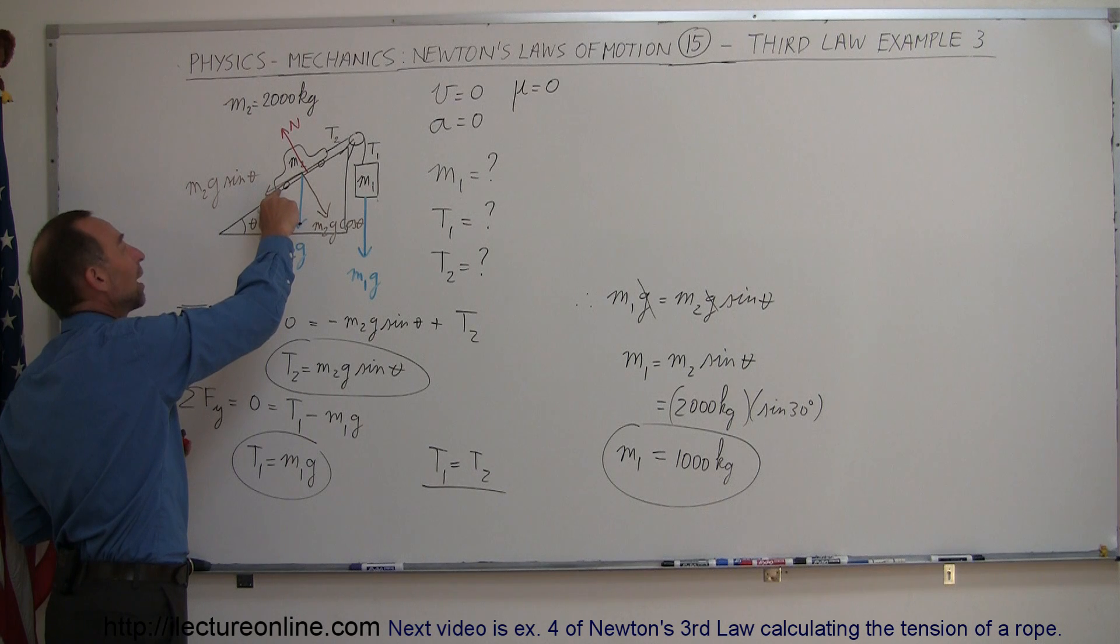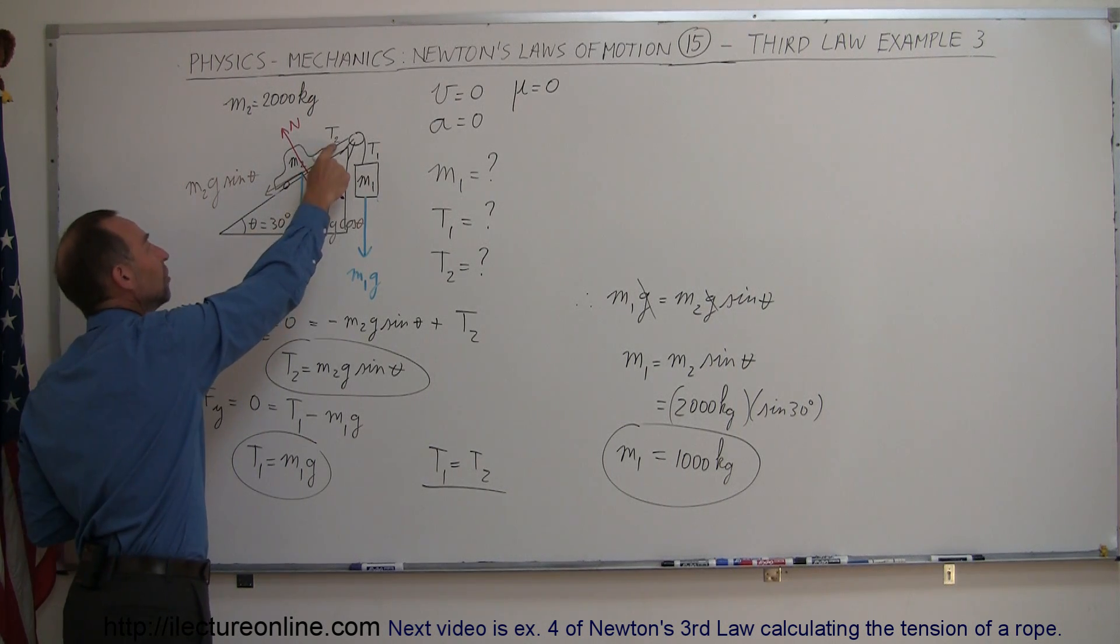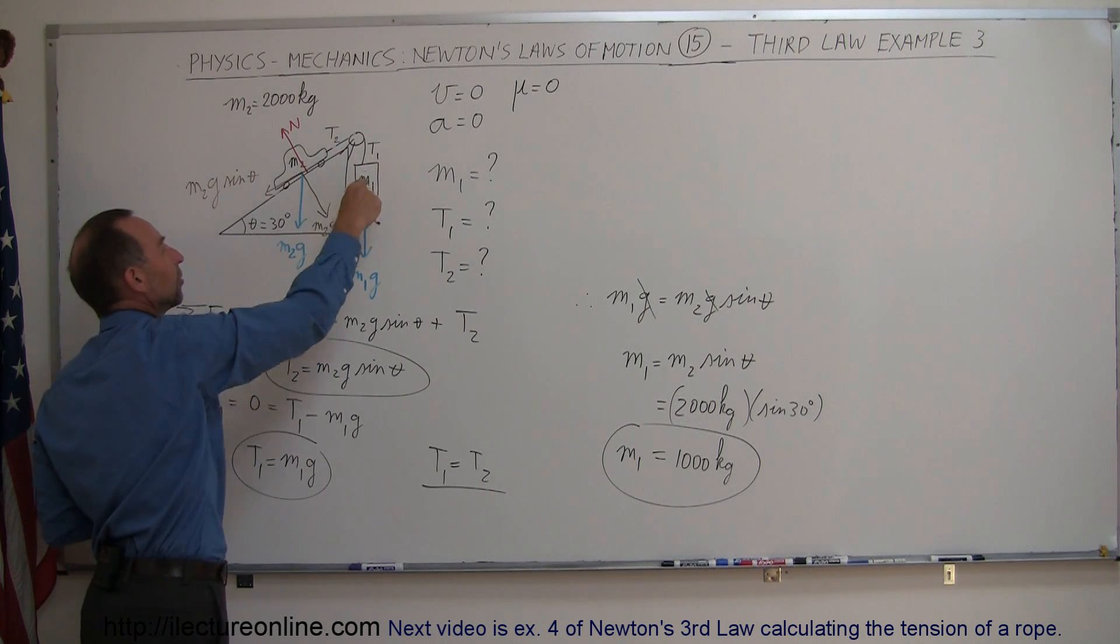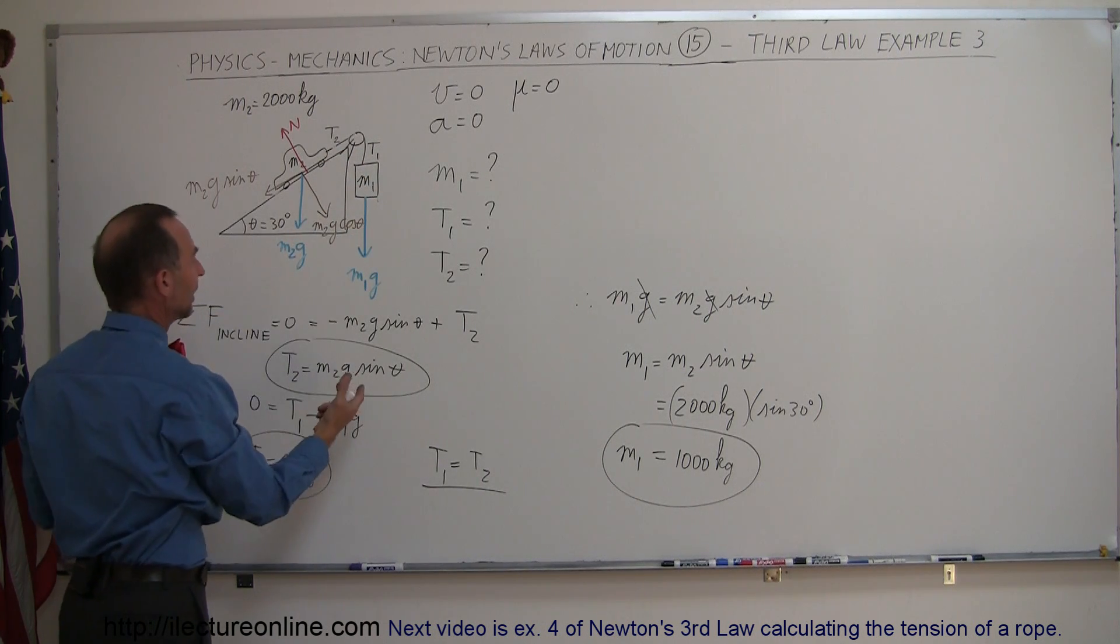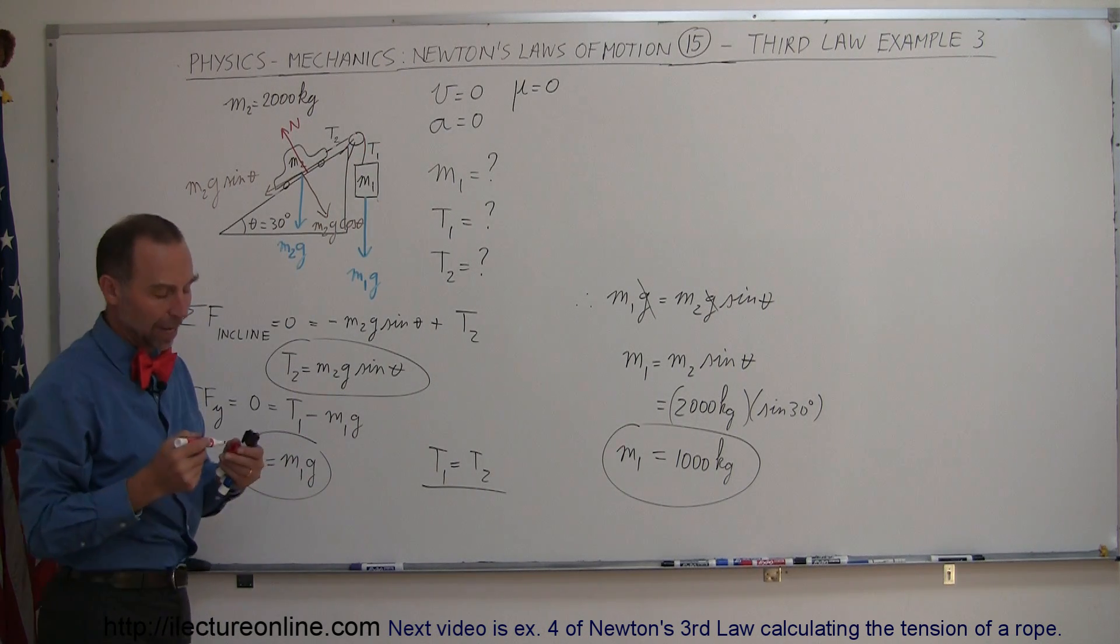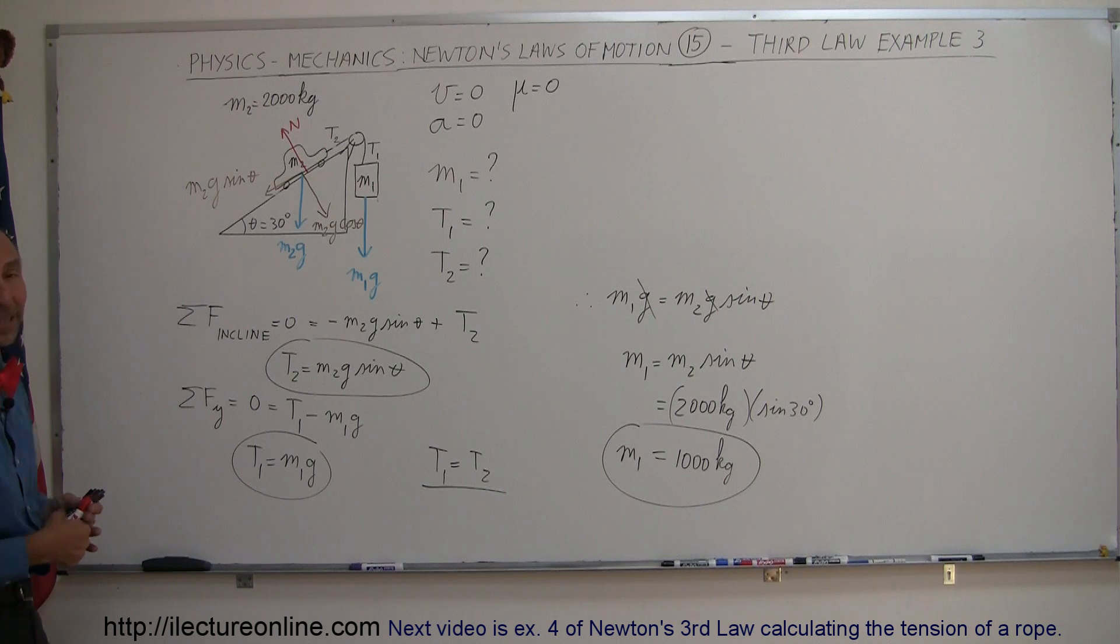And so this is the only component we have left, which also will cancel out with this component because it's not accelerating in this direction. Since there's no acceleration here, this component must equal that component right there. And then realizing that these two must be equal because they're really one in the same cable. And that's how we do a problem like that.